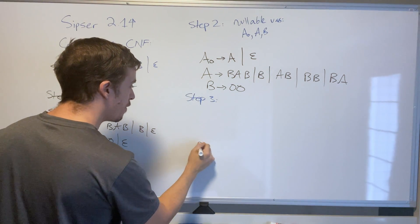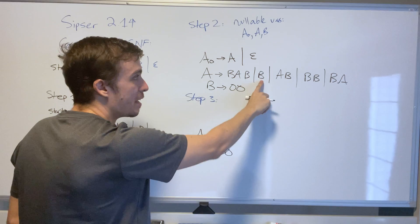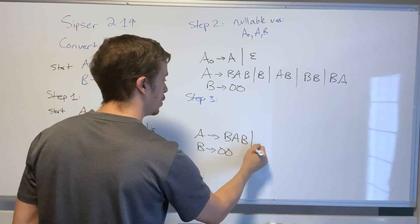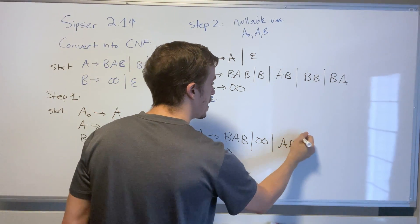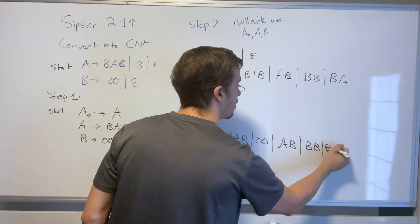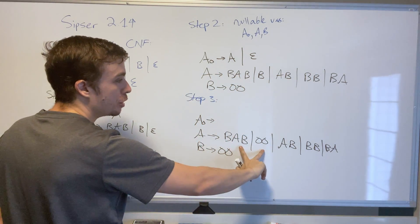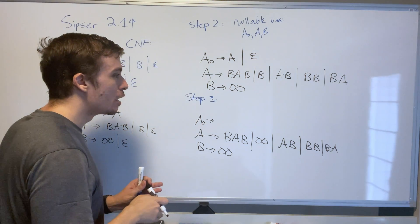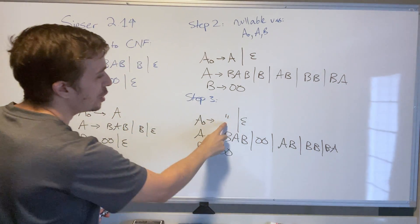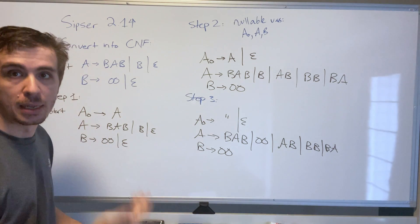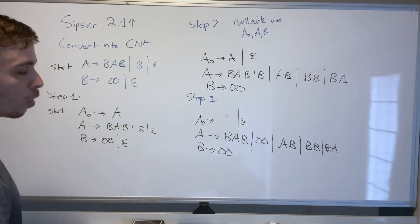The B variable needs no modification. The A variable has a unit rule, so we make the appropriate substitution by copying B's rules up: A → AB | BB | BA. For A₀, we fix its unit rule by copying all of A's rules up as well. After step three, we have no unit rules and no epsilon rules except for the start variable, which is allowed.